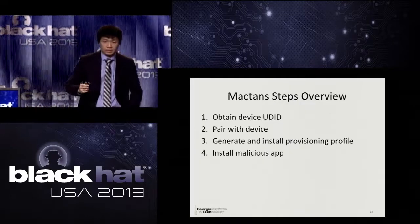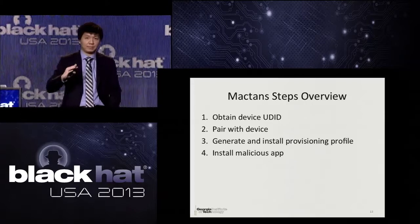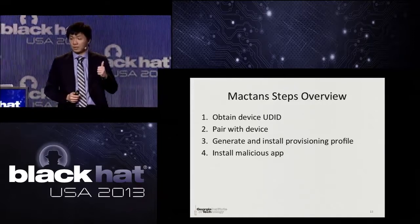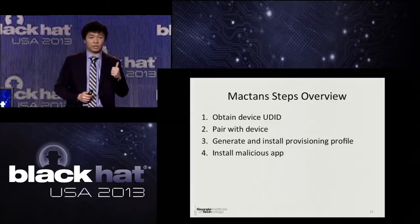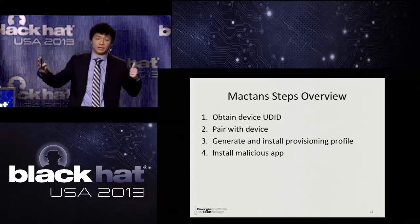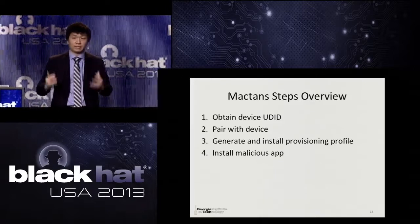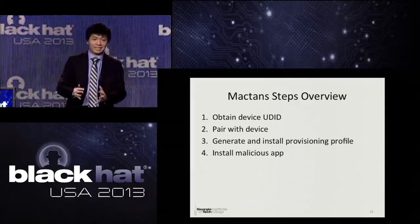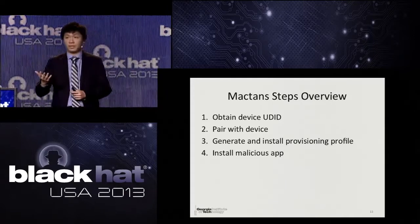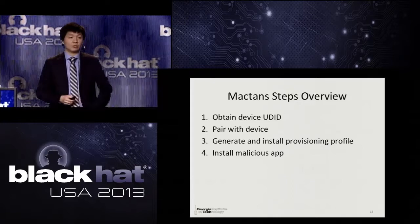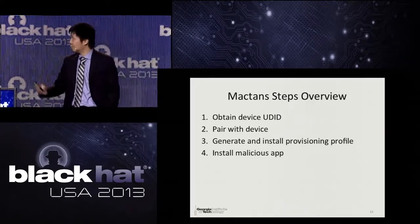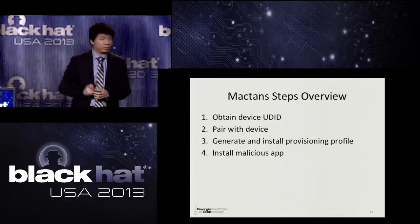Let me guide you through a high-level overview of what happens when a user connects their device to the Mactans charger. Number one, Mactans immediately obtains the device UDID. With the UDID, it generates an appropriate provisioning profile. Then it waits for an opportunity to pair with the device. Once pairing is done, it installs the generated provisioning profile. After the provisioning profile is successfully installed, Mactans can install arbitrary malicious apps. My colleague Yeunjin will now take over to go into further technical details.